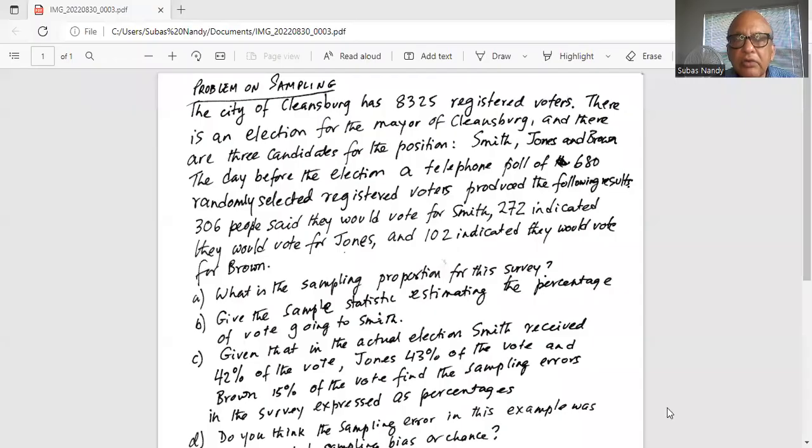Problem on sampling. The city of Plinsburg has 8,325 registered voters. There is an election for the mayor of Plinsburg, and there are three candidates for the position: Smith, Jones, and Brown. The day before the election, a telephone poll of 680 randomly selected registered voters produced the following results: 306 people said they would vote for Smith, 272 indicated they would vote for Jones, and 102 indicated they would vote for Brown.